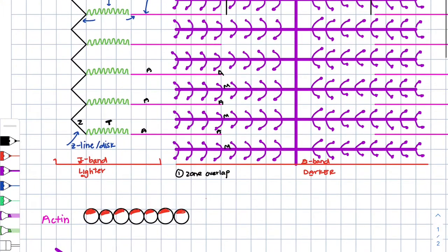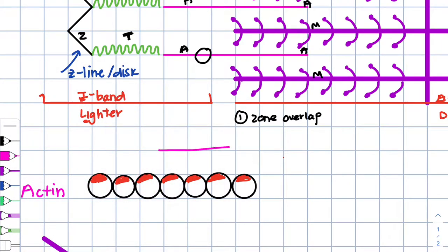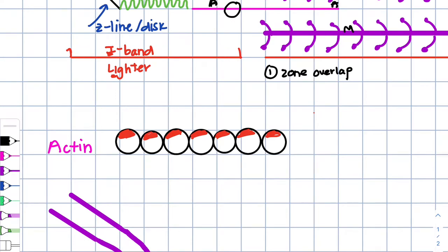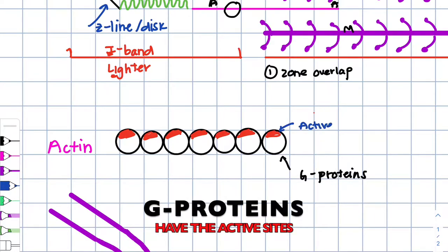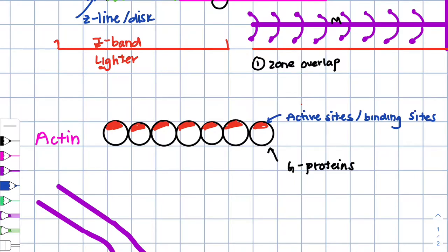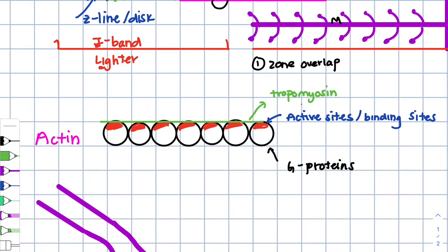Now I'm going to blow up a piece of actin. So we're no longer looking at a string — I've zoomed in so we're looking at these beads. The actin is composed of these beads called the G-proteins. The G-proteins have these active sites. The active sites are found at the G-proteins of actin, and the active sites are also known as the binding sites. The binding sites are being covered by a protein sheath called your tropomyosin. So the tropomyosin is the protein that covers the active sites.